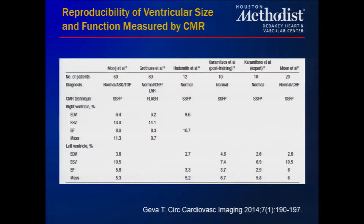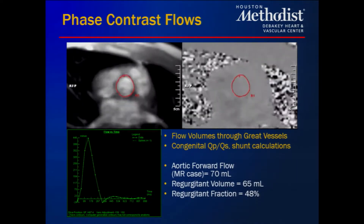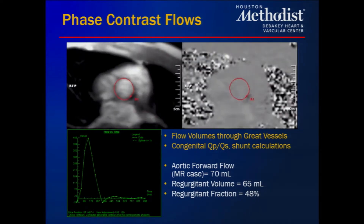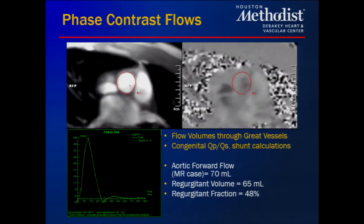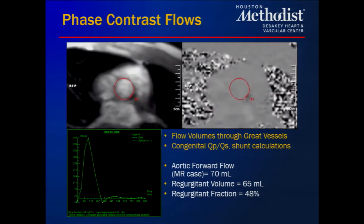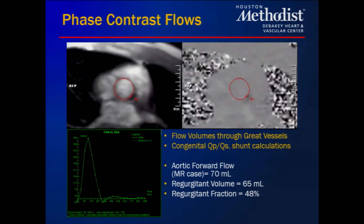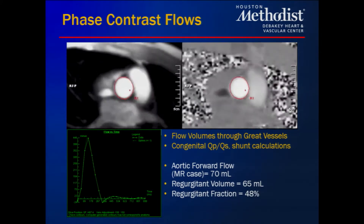The reproducibility of this technique is excellent, with coefficient of variations well below 5% and ejection fraction variations on the order of plus or minus 2%. Using phase contrast flow, we encode velocity on a voxel-by-voxel level. Velocity times area gives us flow, allowing quantification of aortic forward flow, pulmonary artery forward flow, QP/QS, and shunt fractions. For this patient, forward flow was 70 cc's, with 65 cc's going through the regurgitant jet and a regurgitant fraction of about 48%.